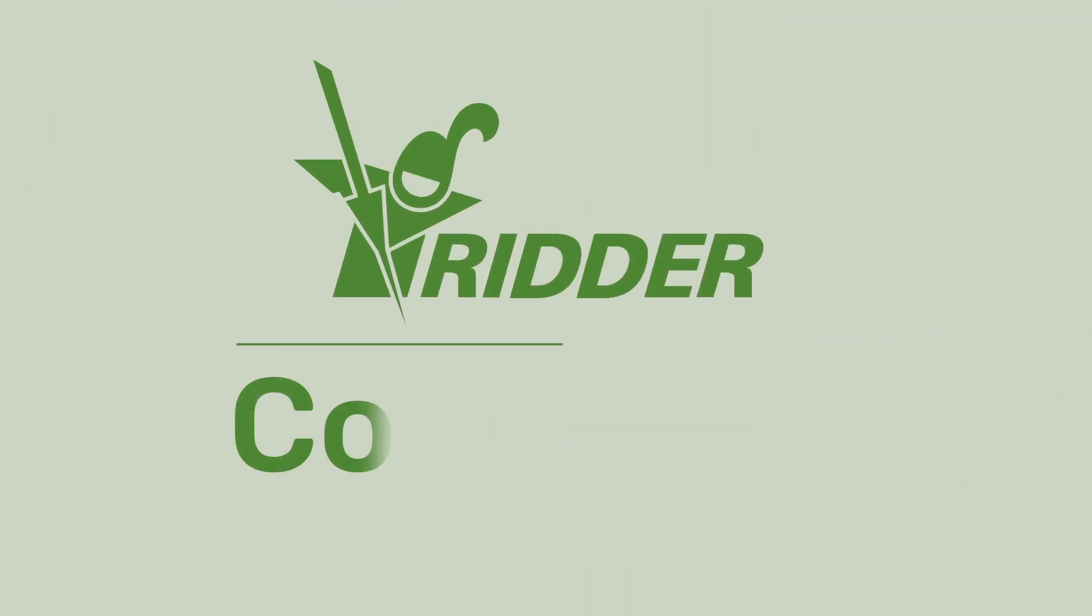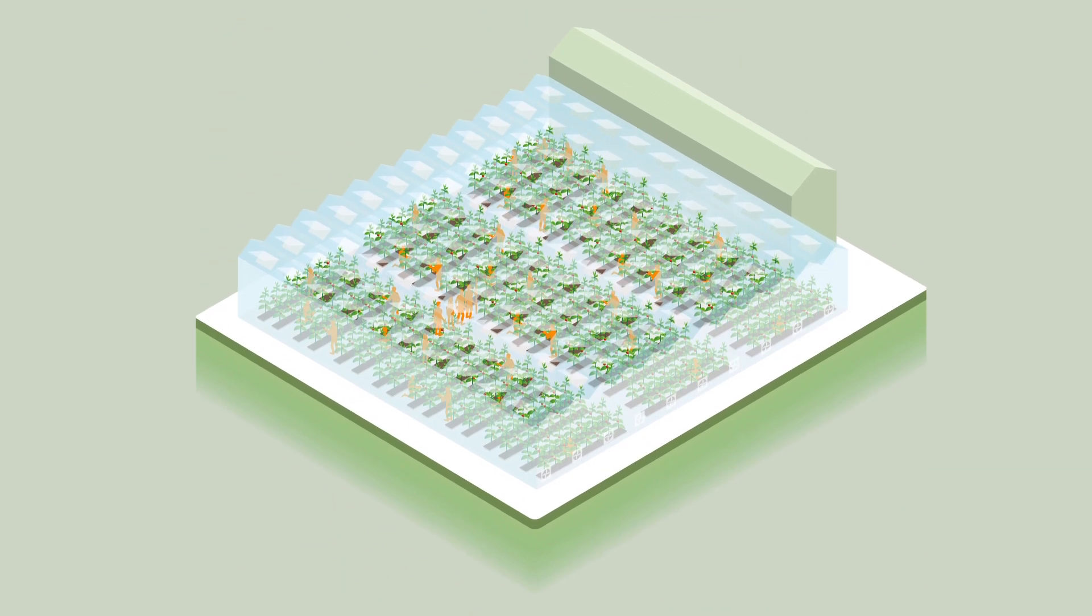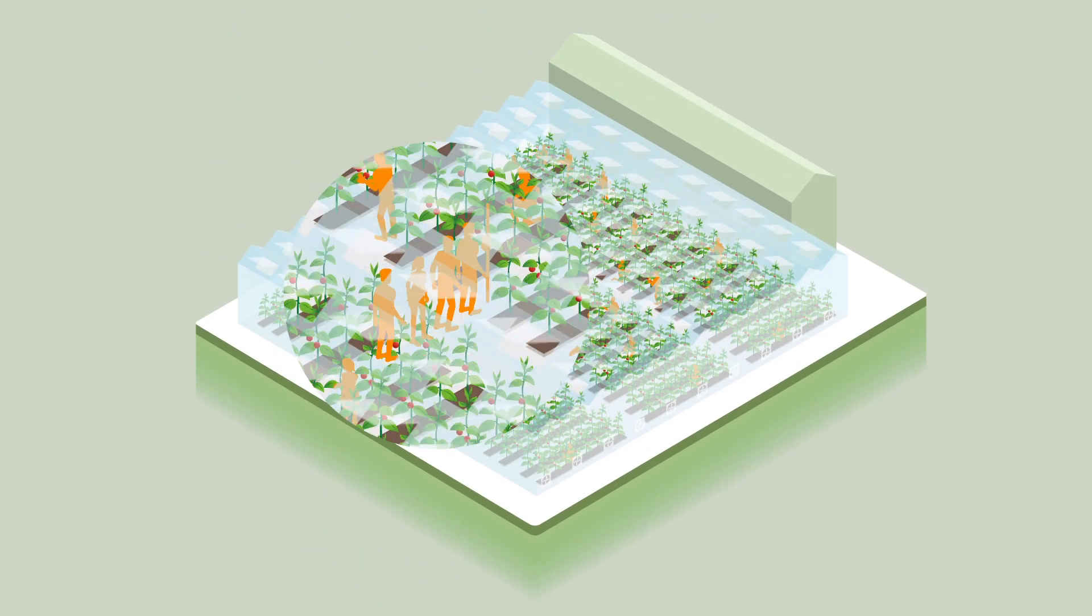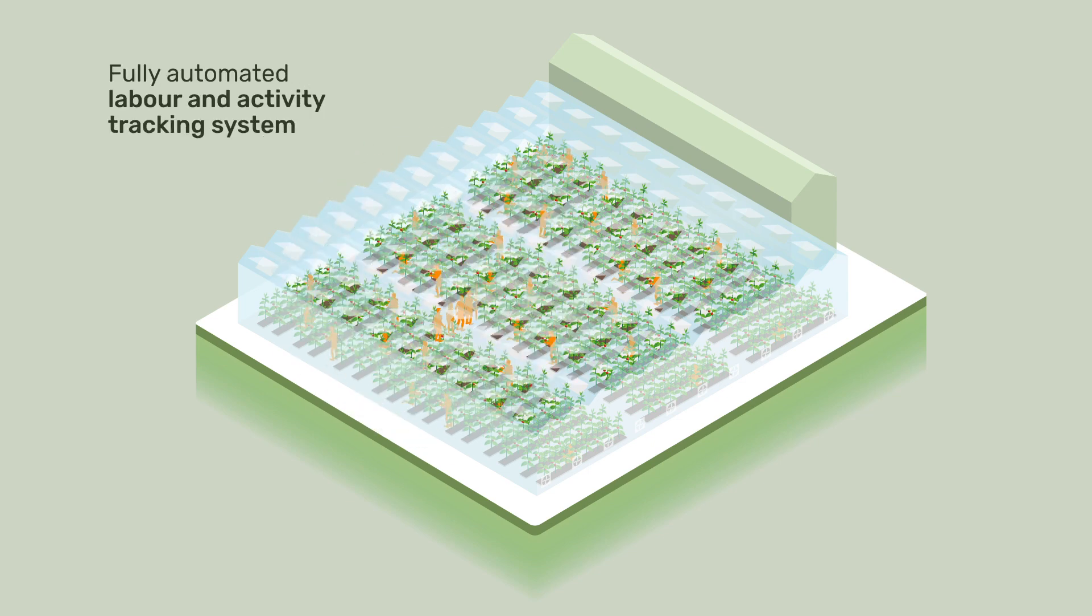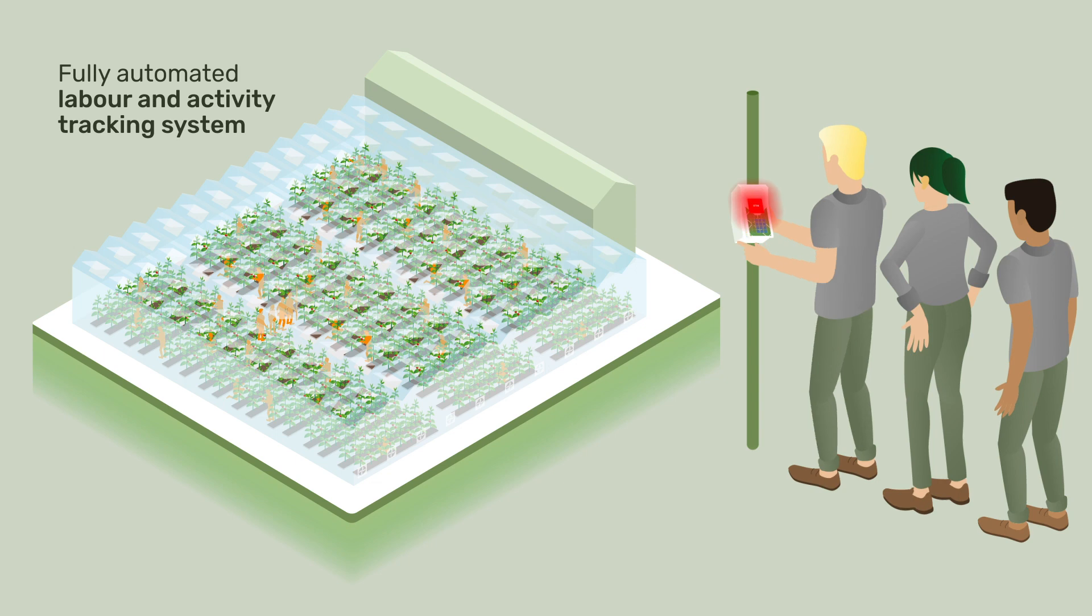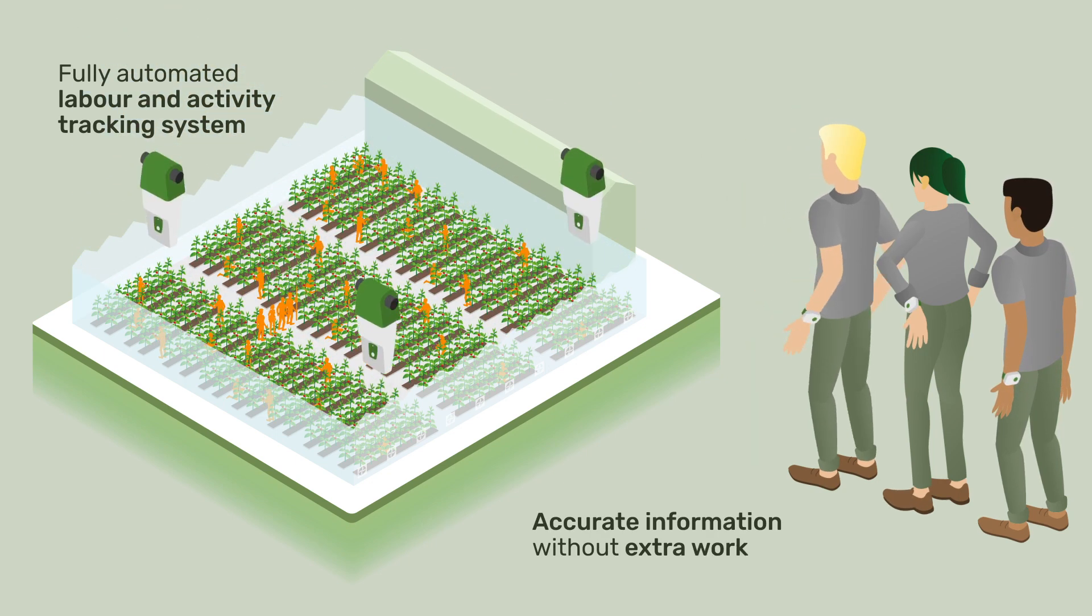The Ritter CoRanger system optimizes the quality of employment registration and drastically reduces time and money spent on entry and corrections of registrations done by the workforce. Ritter CoRanger is a fully automated labor tracking system that monitors and registers actions such as harvesting and de-leafing based on accurate position detection, taking activity registration out of the workforce's hands, letting them focus on the quality of their work without worrying about labor registration.